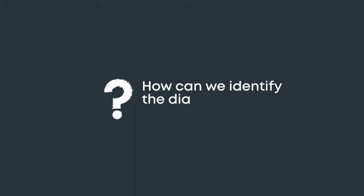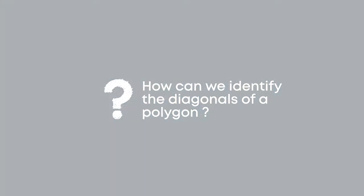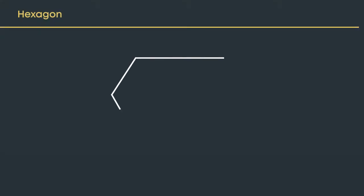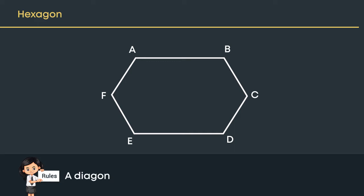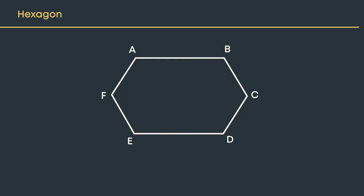How can we identify the diagonals of a polygon? Let us consider a hexagon. We know that a hexagon has six vertices. Let us name the vertices of this hexagon as A, B, C, D, E, and F. We have already learned that a line segment joining two non-consecutive vertices of a polygon is called its diagonal.